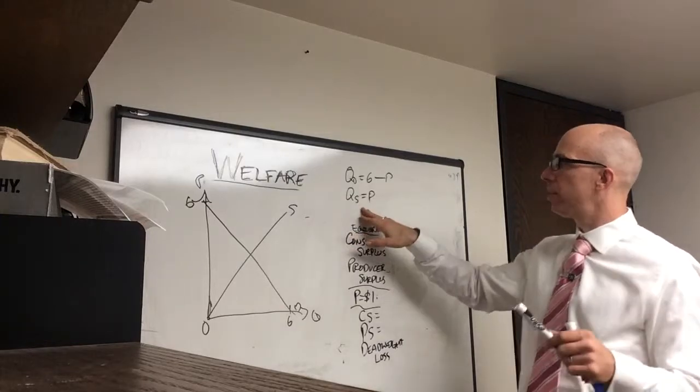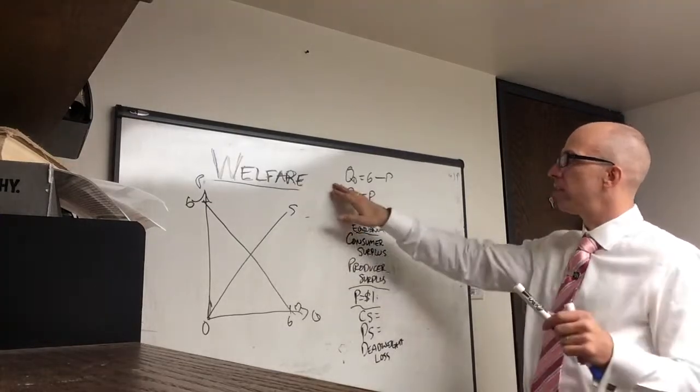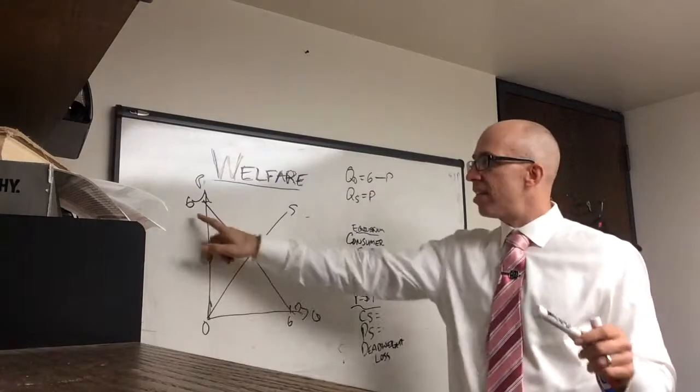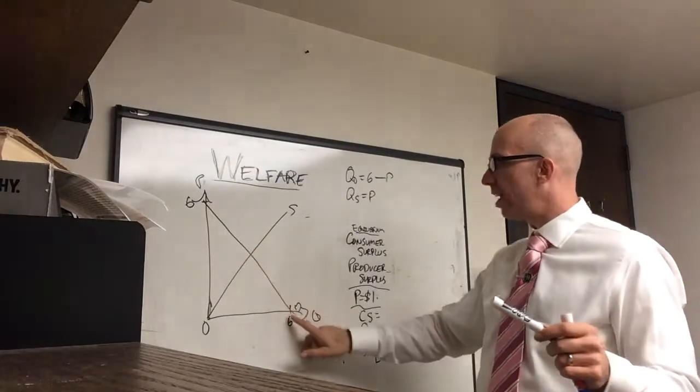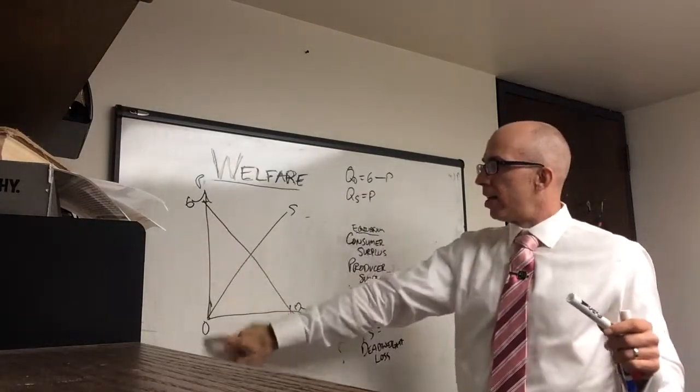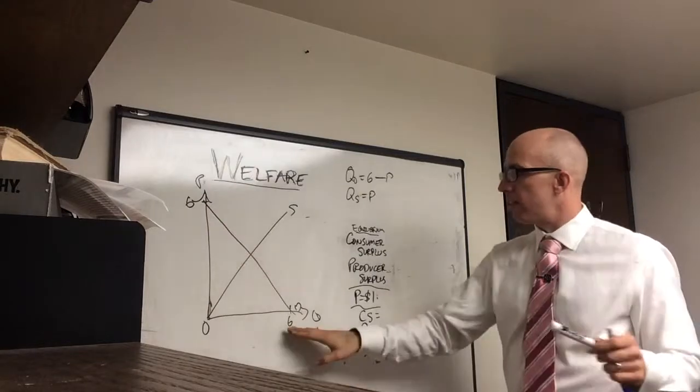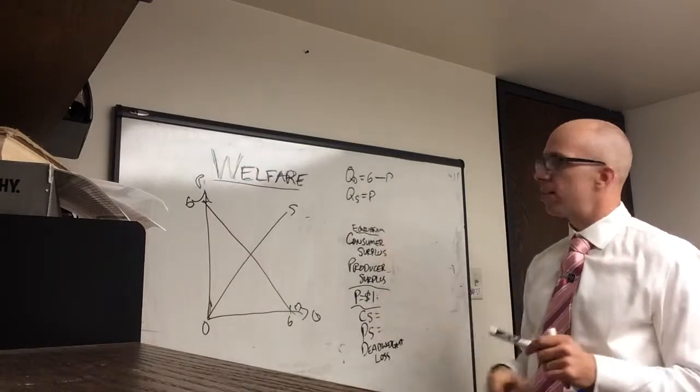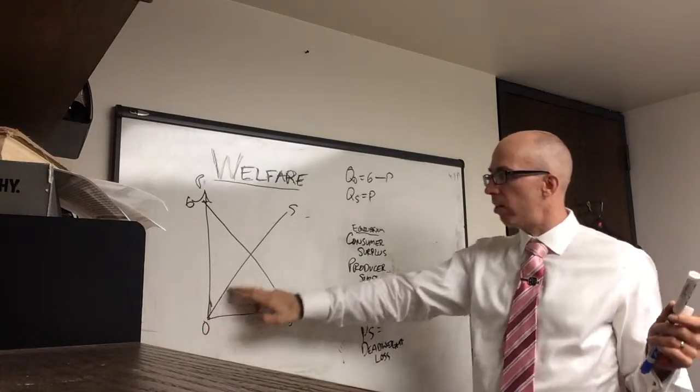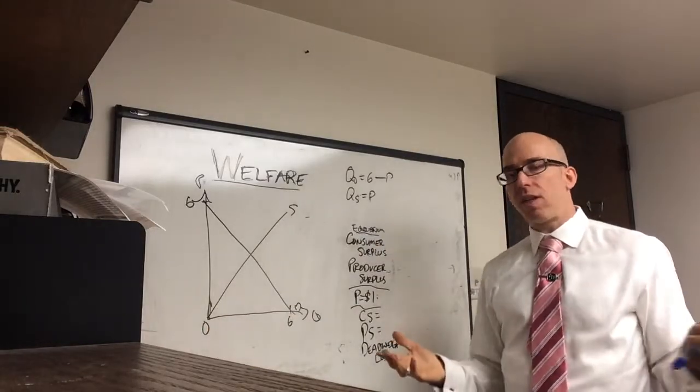So I'm going to use these examples here. This is a graphical depiction of these equations. Qd is 6 minus p. This has an intercept of 6 and a slope of negative 1. When quantity is 0, price is 6. And when price is 0, quantity is 6. Quantity supplied has a slope of positive 1 and an intercept of 0. So they're fairly simple curves.